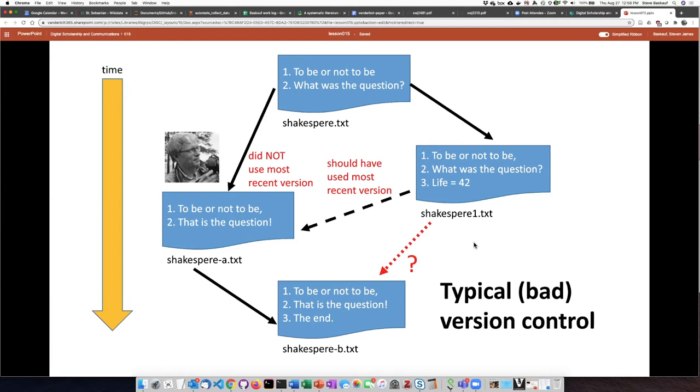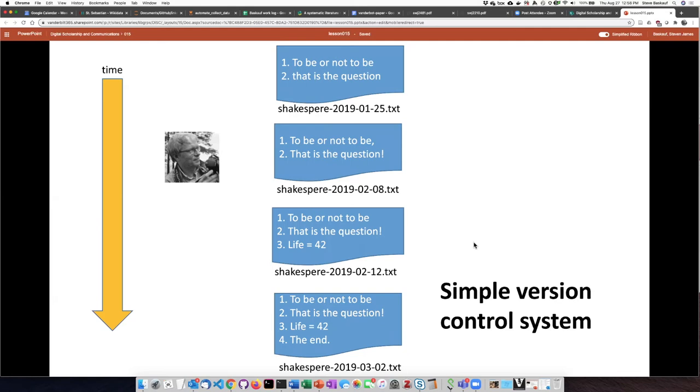Another alternative that I actually use sometimes is a very simple informal version control system. In that system, you take the file name that you're working with and you simply append an ISO 8601 date. That's a date with year, month, and days in that order separated by dashes.